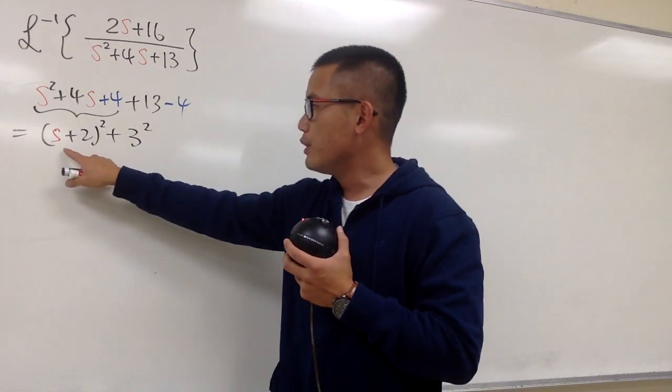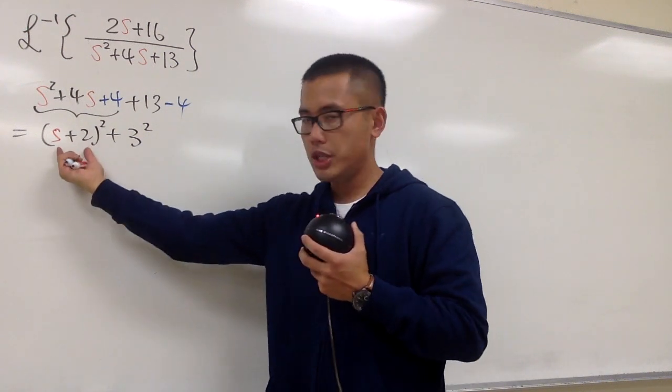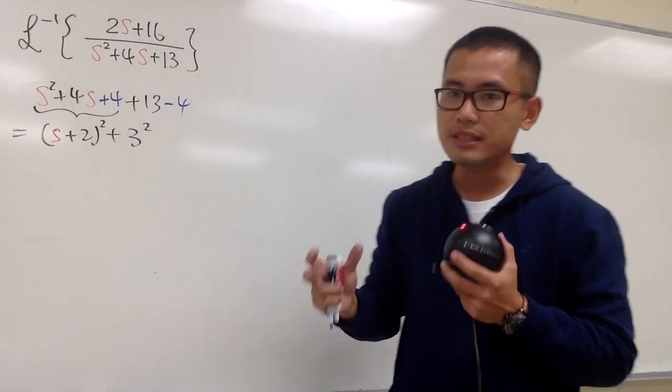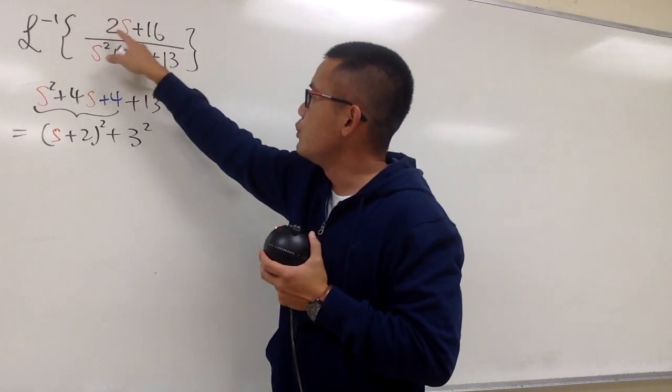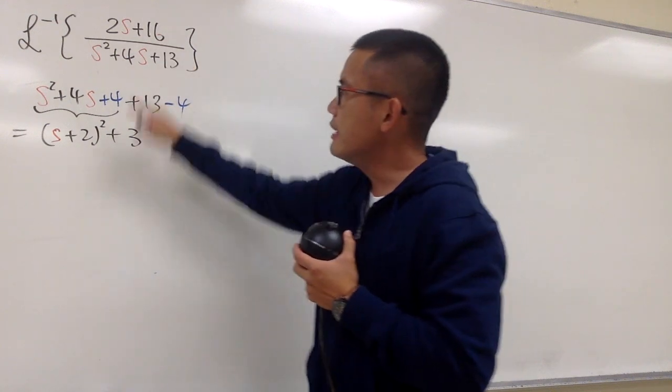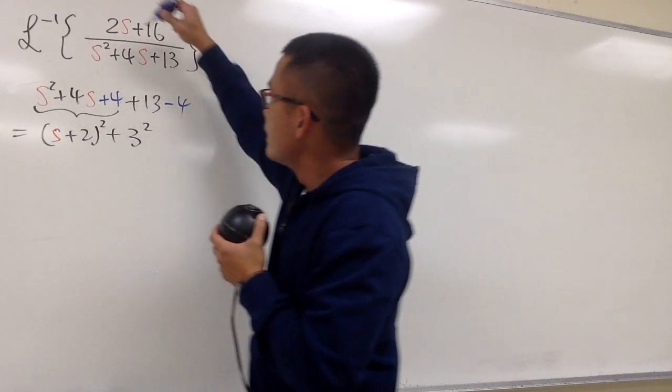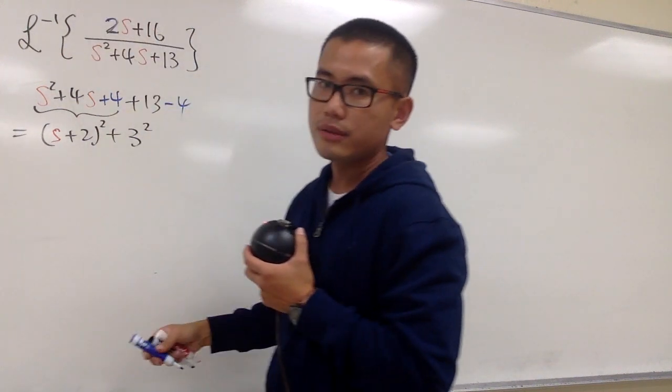Okay, so if you look at s plus 2 here, on the top, I should also have an s plus 2, isn't it? But I do have 2s plus 16, and this 2 is bothering us. So what we need to do is, look at this 2 here, and I'm going to factor it out.